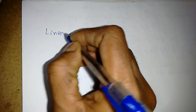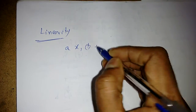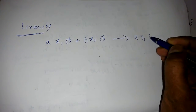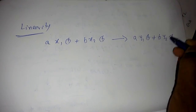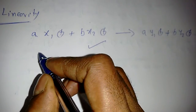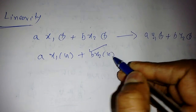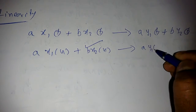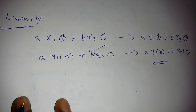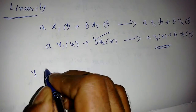Linearity is also simple. Given two signals x₁(t) and x₂(t), if we apply the input a·x₁(t) + b·x₂(t), we should get output a·y₁(t) + b·y₂(t). For discrete time: a·x₁[n] + b·x₂[n] should produce a·y₁[n] + b·y₂[n]. Consider the system y(t) = x(t-1) + x(t-2).